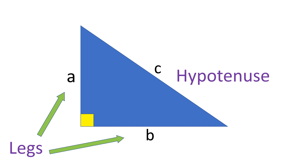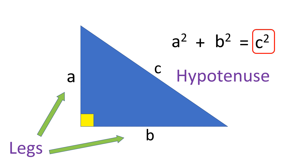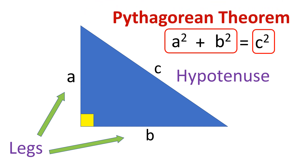With this, there is an equation that is always true for every right triangle in relation to its sides. And that is: A squared plus B squared is equal to C squared. This means that the square of the length of the hypotenuse is equal to the sum of the squares of its legs. And this is what we call the Pythagorean theorem.